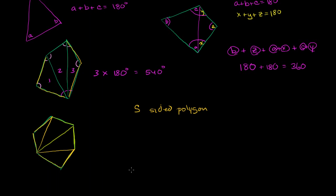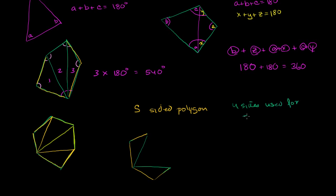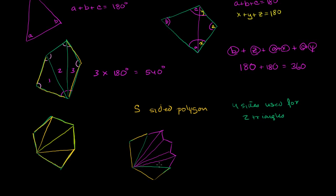So once again, four of the sides are going to be used to make two triangles. So there's two sides right over there and then two sides right over there — I can draw one triangle over there and another triangle right over there. So four sides used for two triangles. And then no matter how many sides I have left over — I've already used four of the sides — it looks like every other incremental side I can get another triangle out of it. So one triangle out of there, one triangle out of that side, one triangle out of that side, one triangle out of that side, and one triangle out of this side.